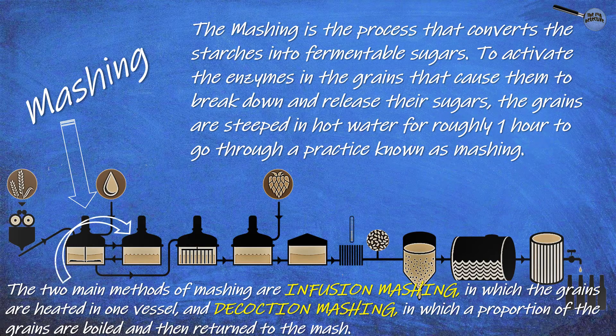The two main methods of mashing are infusion mashing, in which the grains are heated in one vessel, and decoction mashing, in which a proportion of the grains are boiled and then returned to the mash.